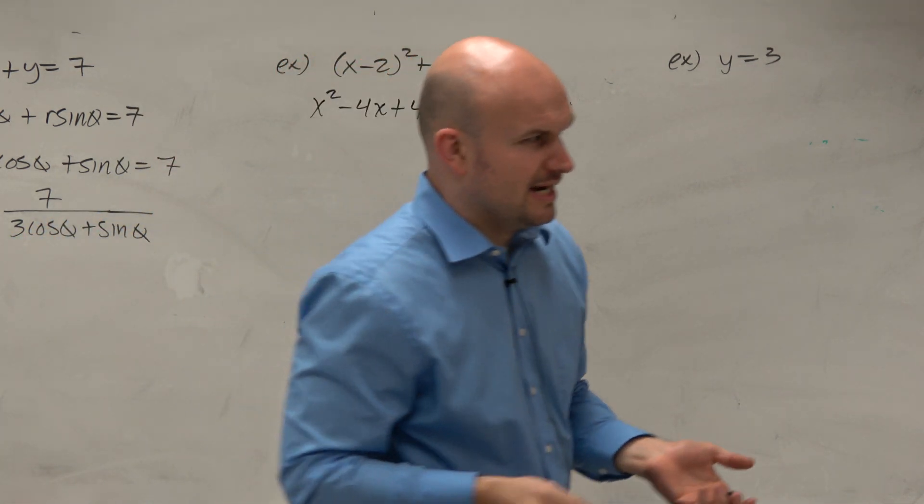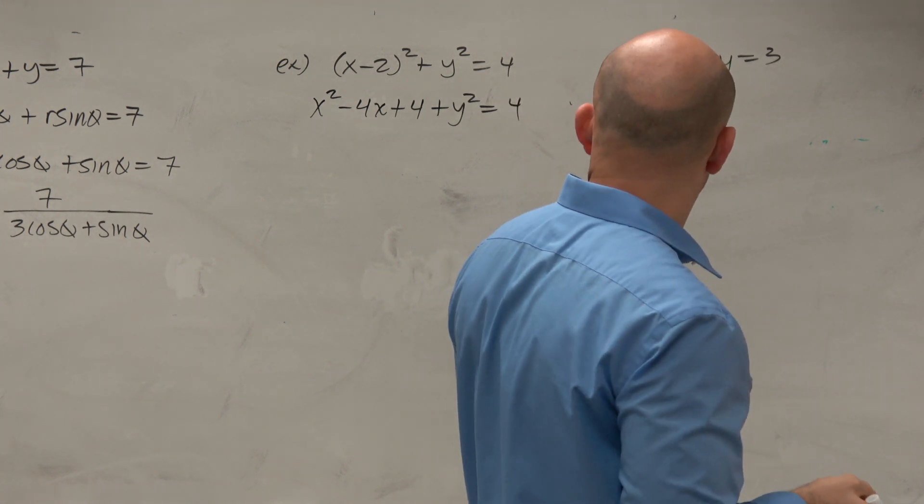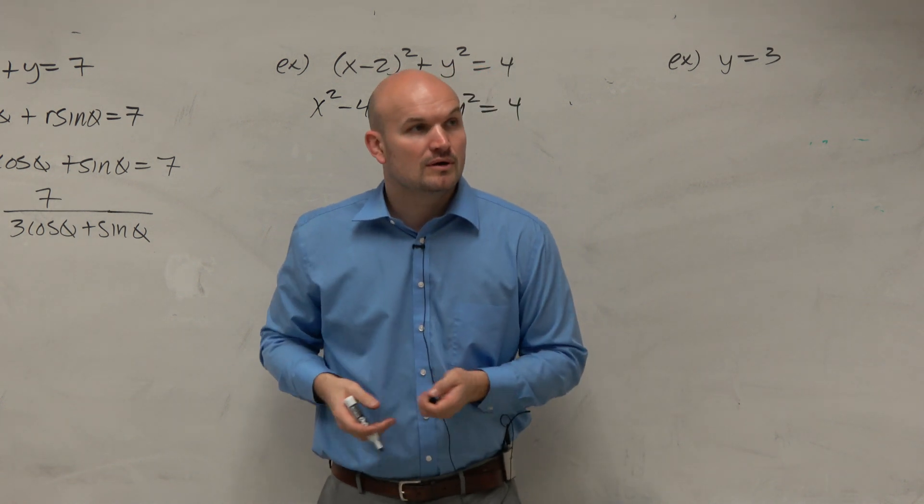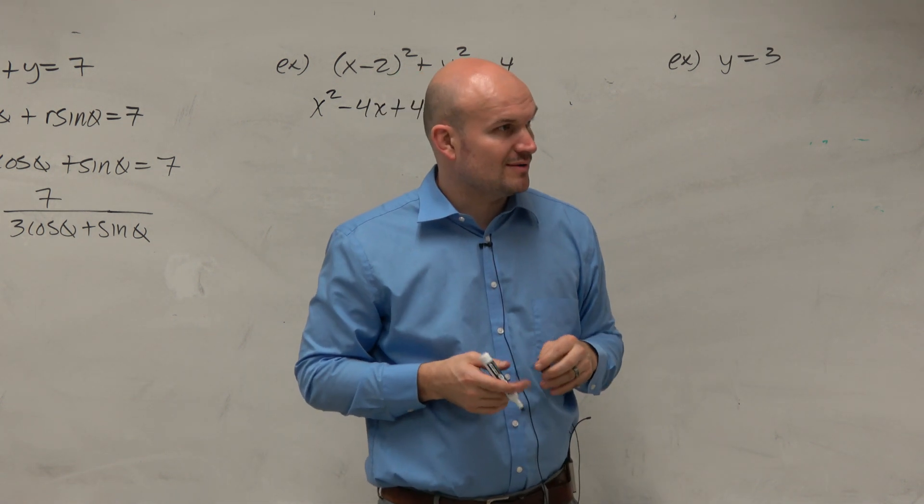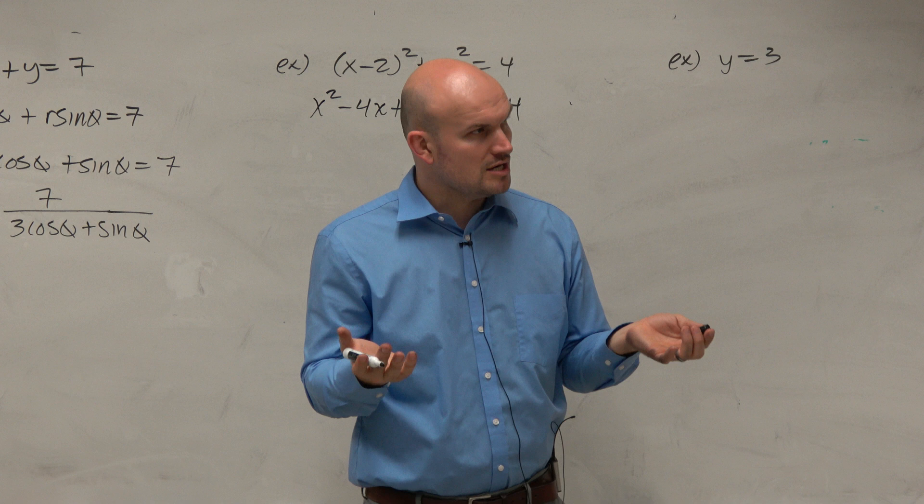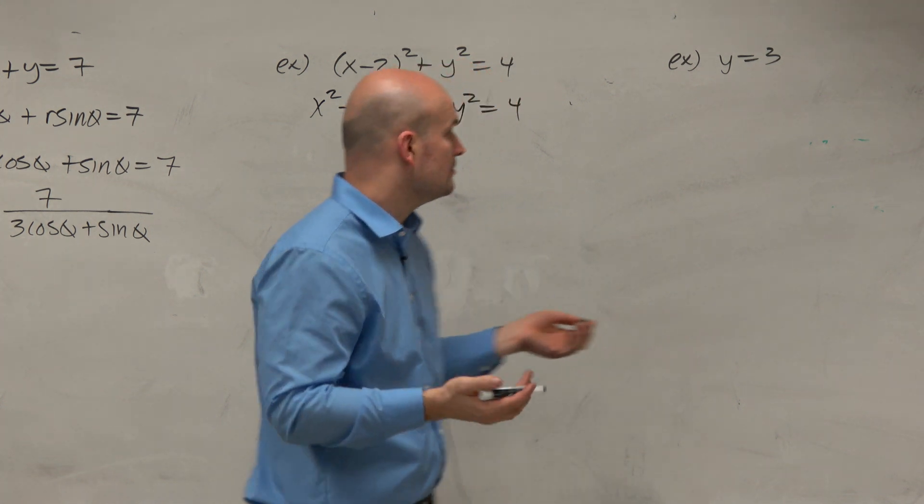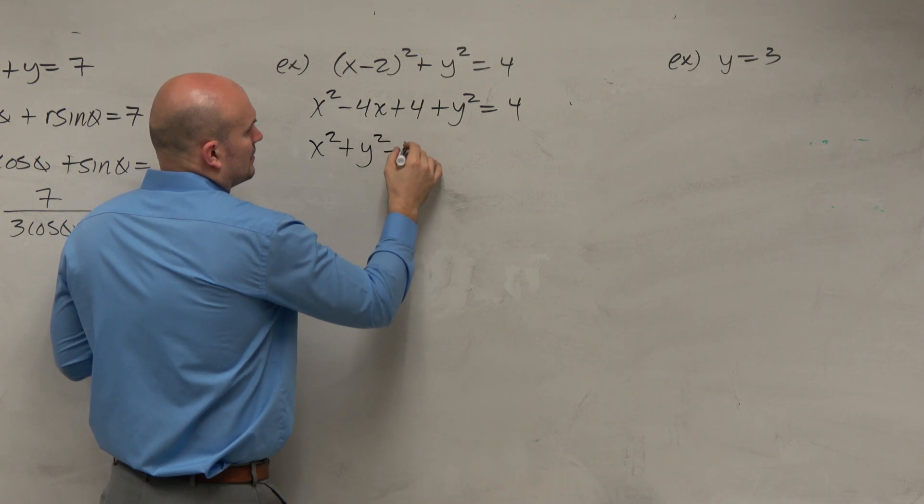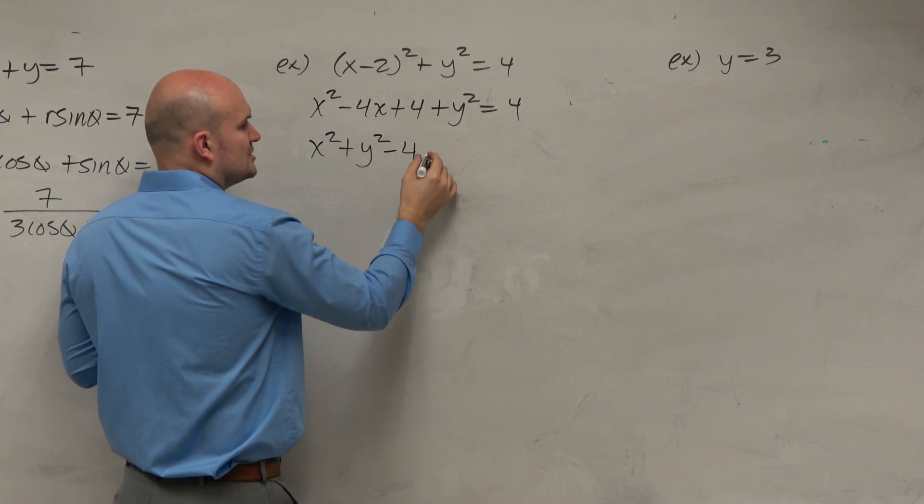Now, you might look at this and say, all right, well, I don't have an x anymore. So what am I going to do in this case? Well, I recognize there's another equation up there: x squared plus y squared equals r squared. So why don't I just rearrange this? Oh, I do have an x. So could I rearrange?